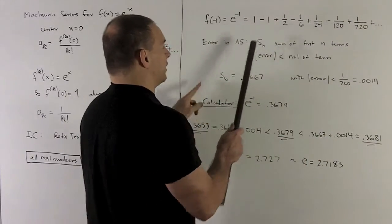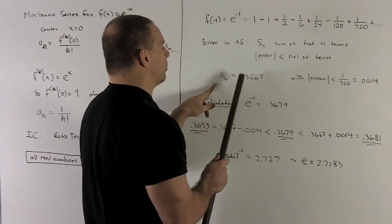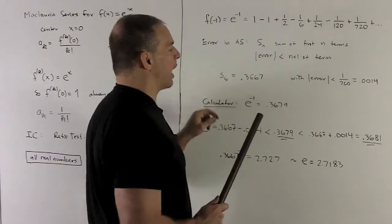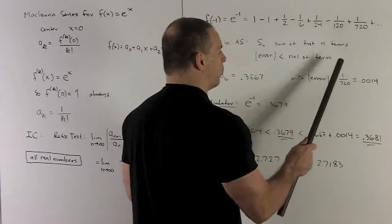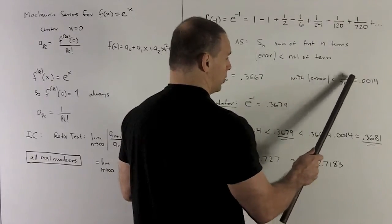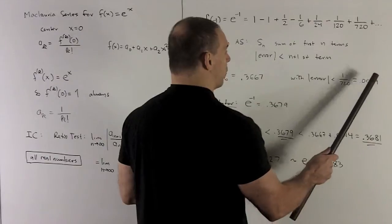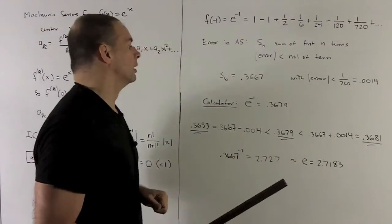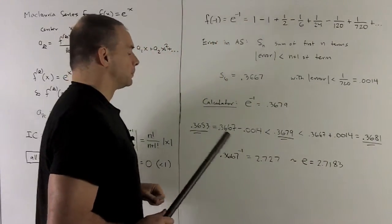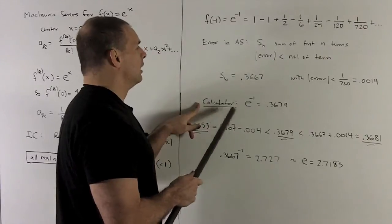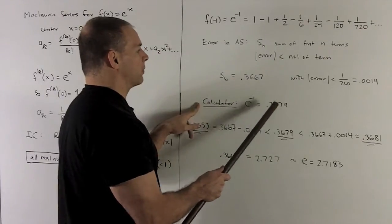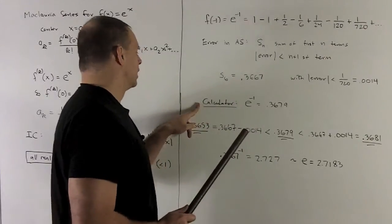So I take these first six terms, we add them up, we get 0.3667 rounded. And then the error is going to be less than one over 720, which is going to be roughly 0.0014 rounded. I go to my calculator, e to the minus one is going to be 0.3679. So let's see,